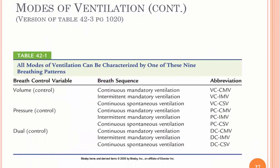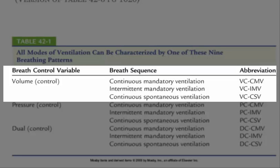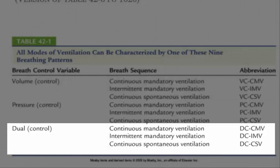A table describes the modes: in volume control you can have continuous mandatory ventilation or intermittent mandatory ventilation, with abbreviations beginning with VC for volume control. In pressure control the same options exist, abbreviated PC-CMV for pressure control. And for dual control where one variable becomes a target, the abbreviation is DC-CMV.